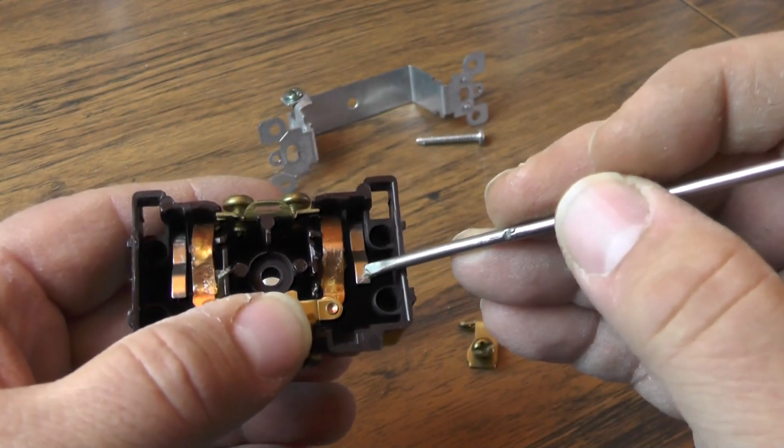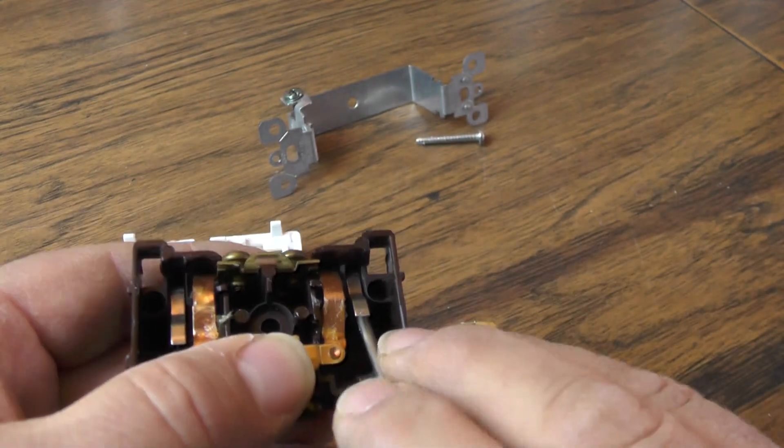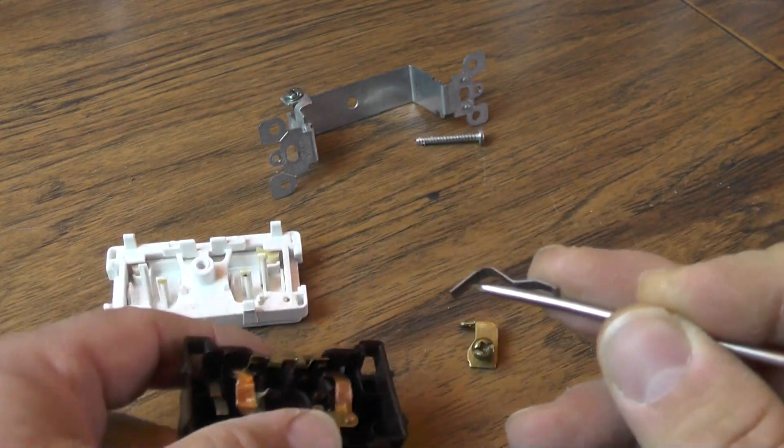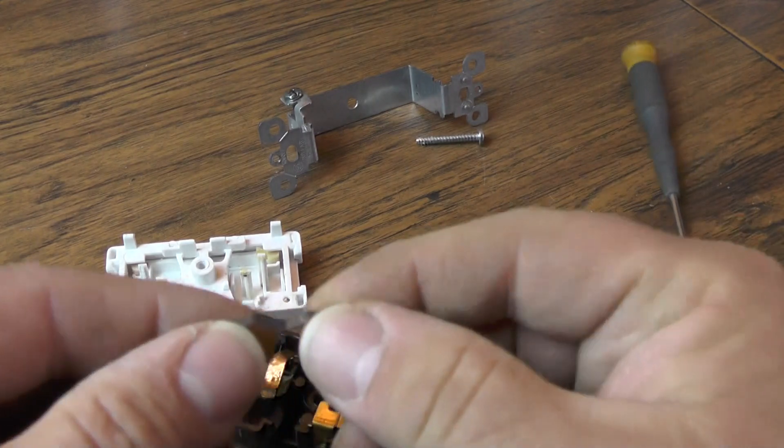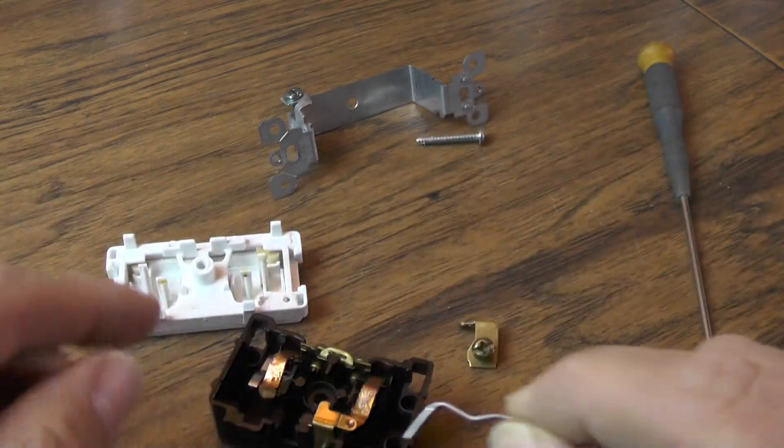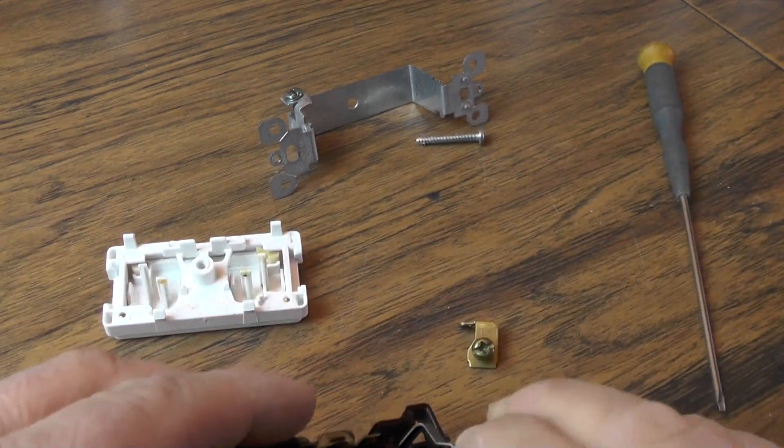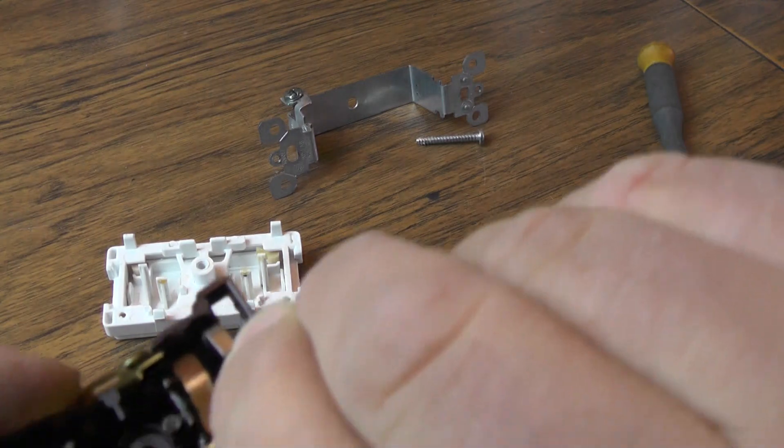And then this other little detent right here actually just slides right out. This is actually just a little metal detent to operate the switch. So it just slips down.